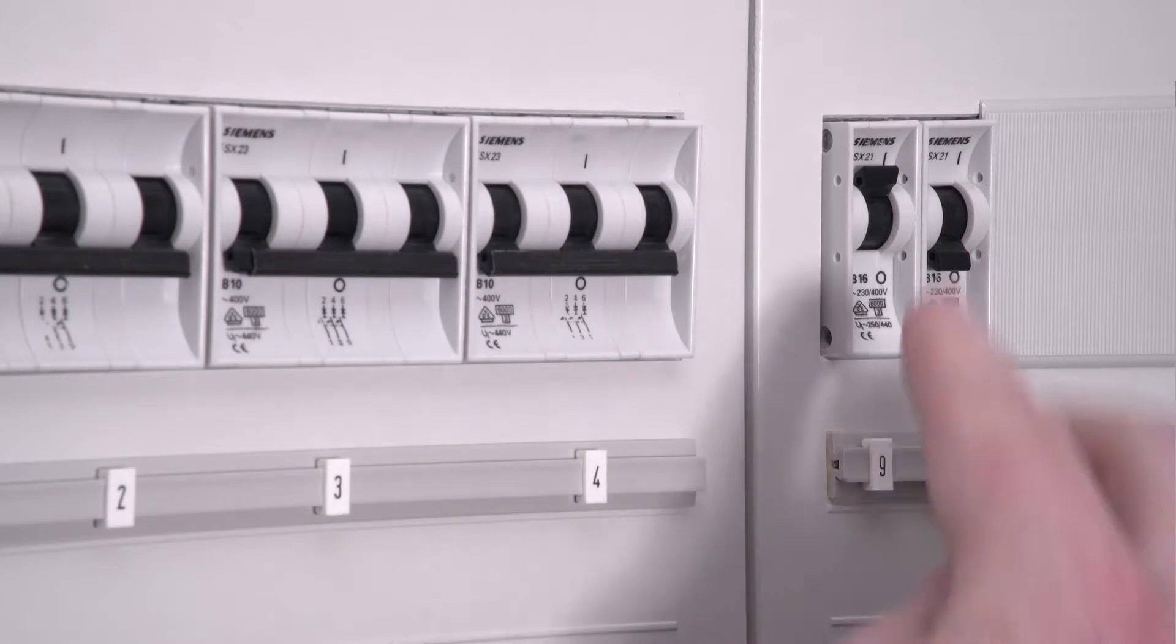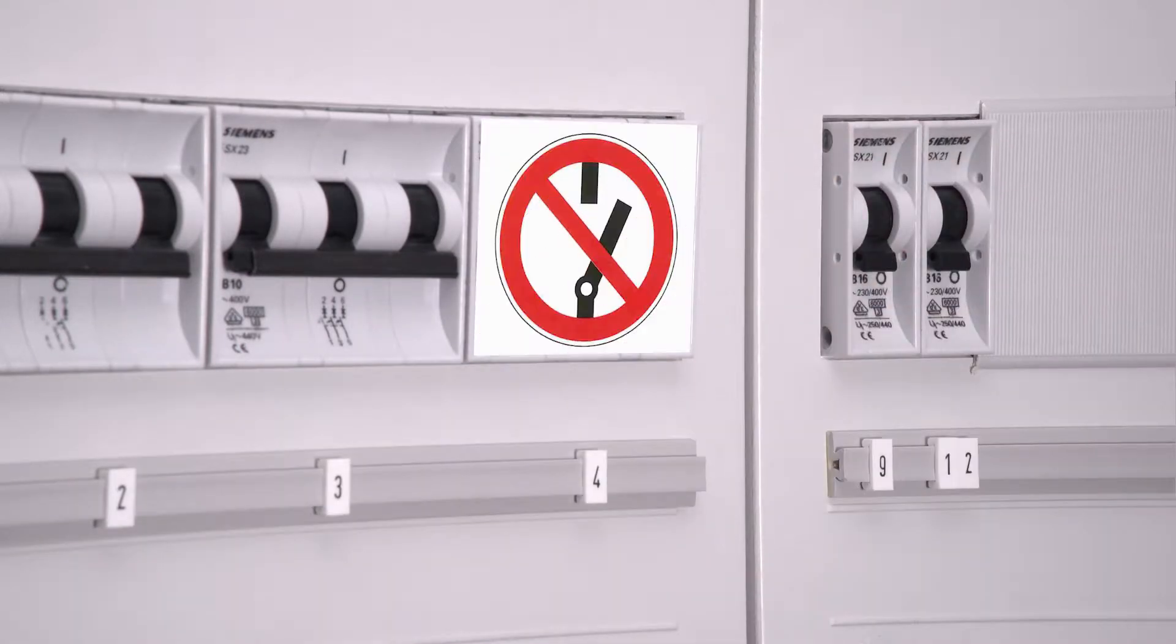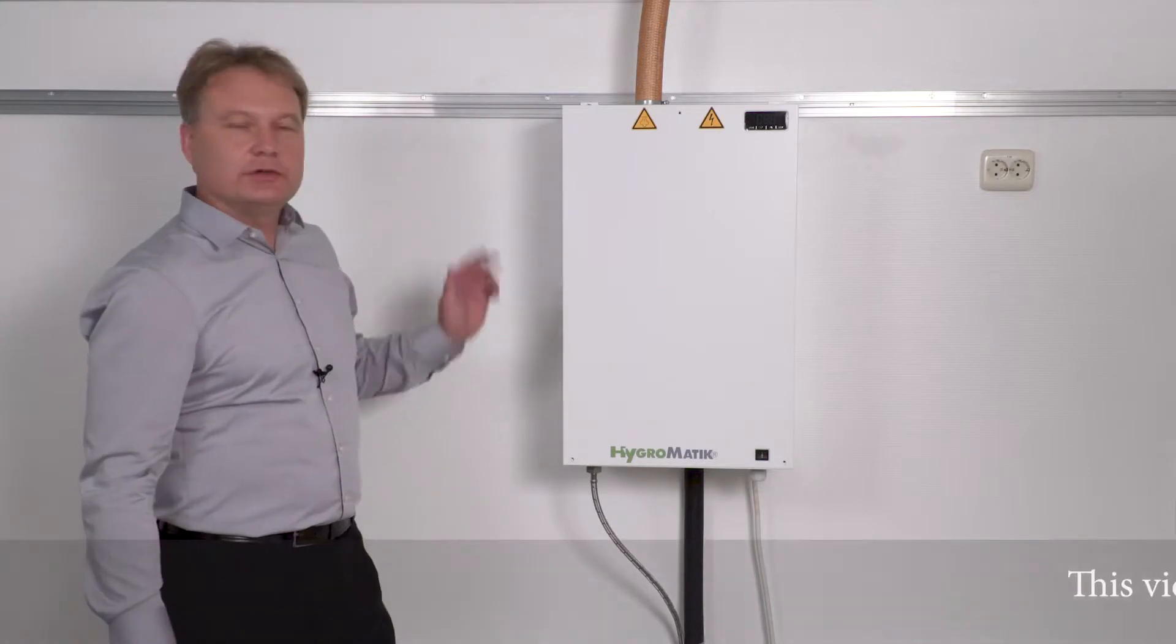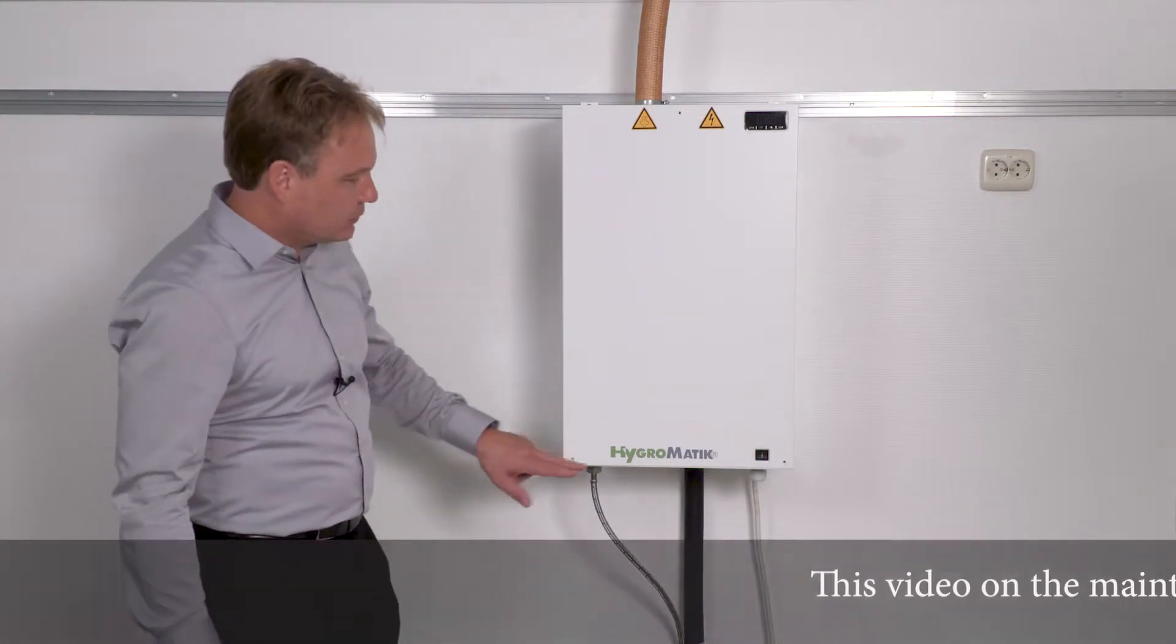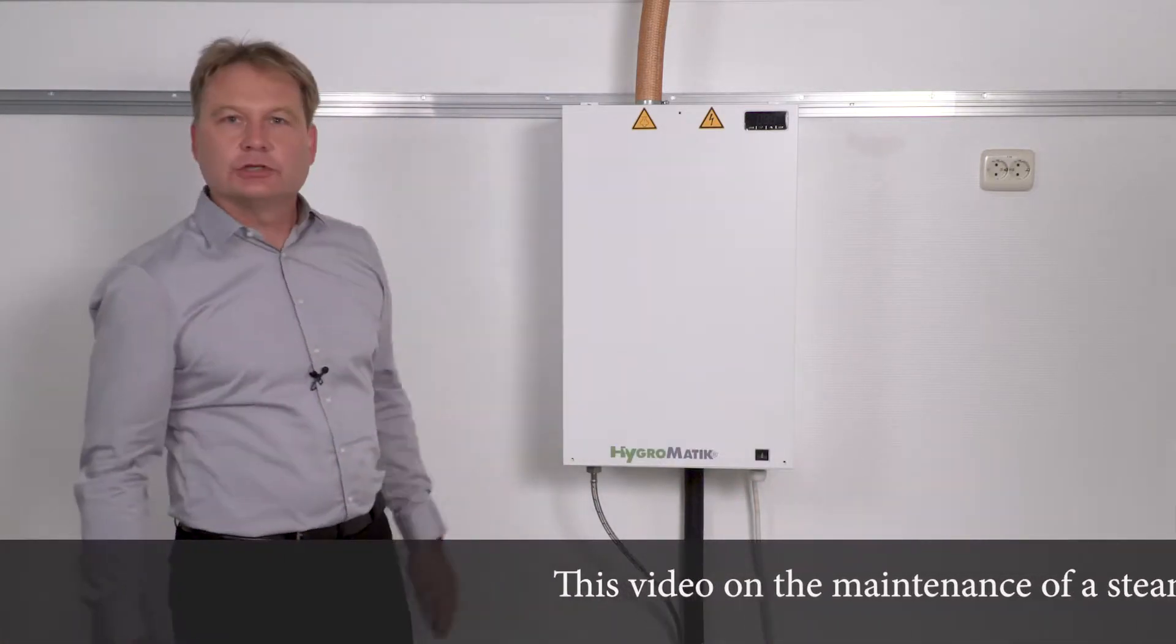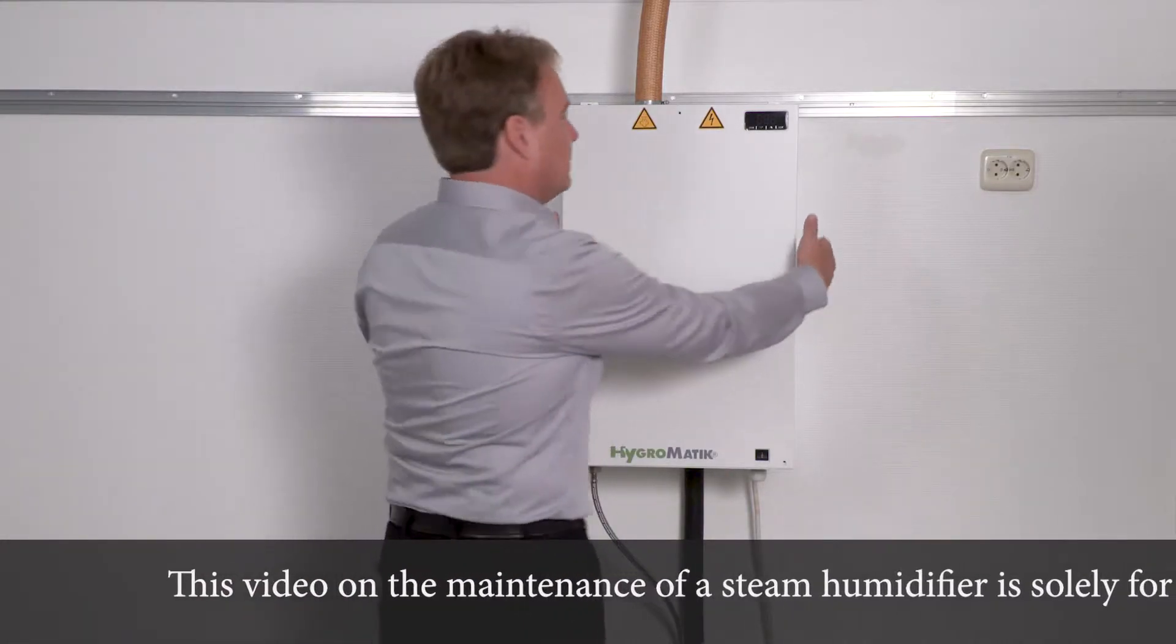The next step is to disconnect the unit from the power supply and secure it from being restarted to avoid injuries. I have already removed these three screws so I can detach the housing cover from the unit. I can now remove the housing cover.